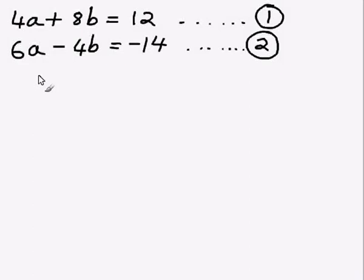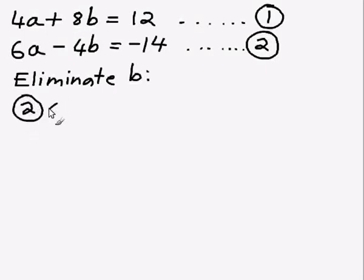So what I'm going to try and do is change the second equation so that it has a negative 8b in it. So first, I'm going to write down that I'm trying to eliminate b, the variable b. So how do I get negative 8b from negative 4b? Well, it's fairly easy. What I need to do is multiply equation 2 by 2.